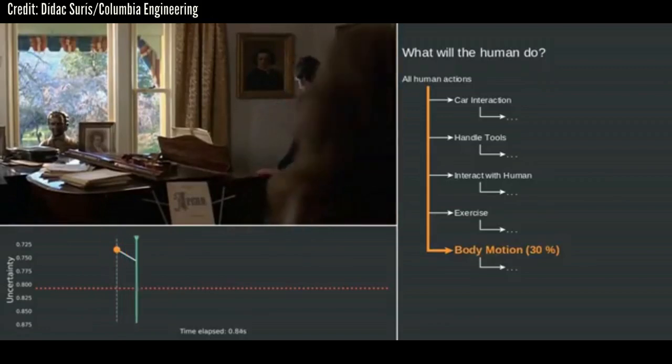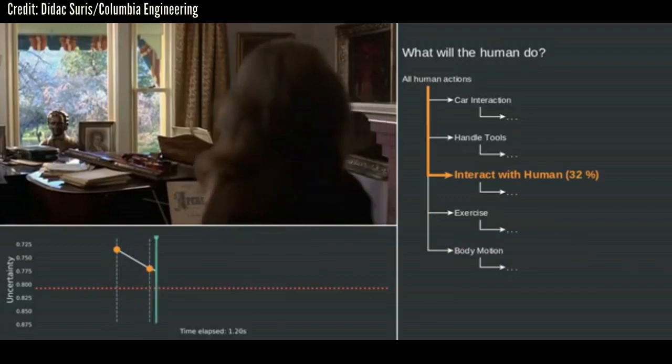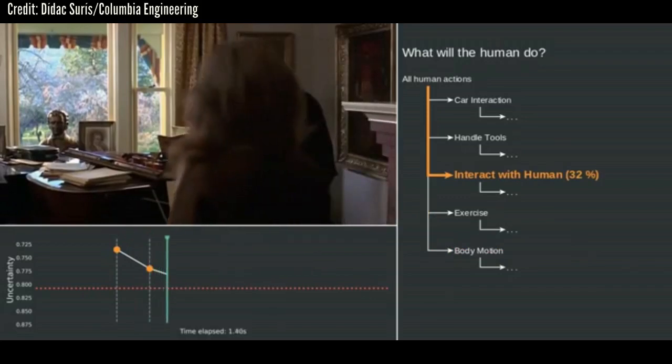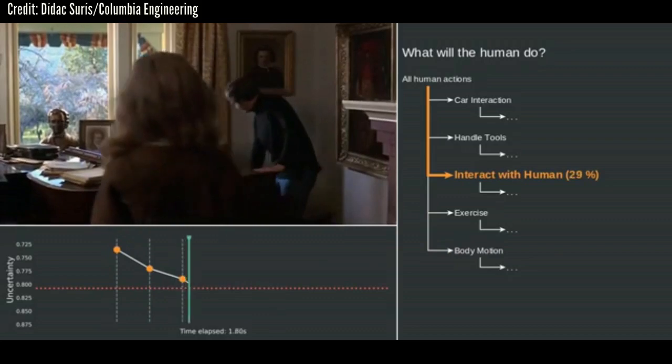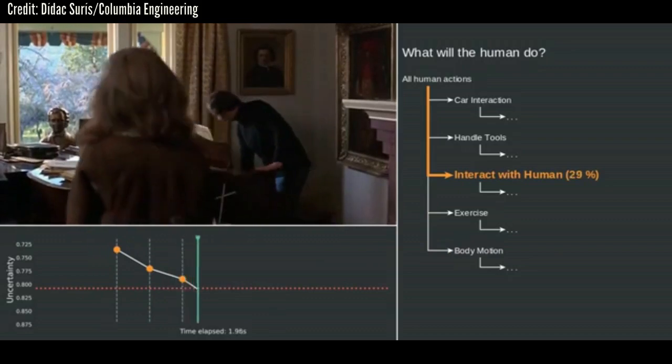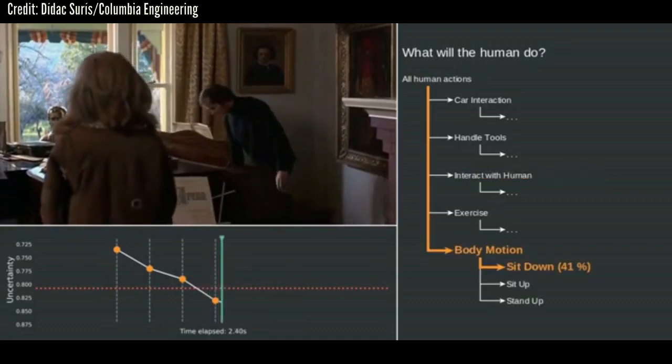After analyzing thousands of hours of movies, sports games and shows like The Office, the system learns to predict hundreds of activities, from handshaking to fist-bumping. When it can't predict the specific action, it finds the higher-level concept that links them, in this case the word greeting.